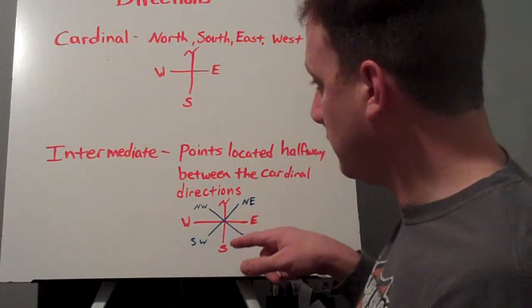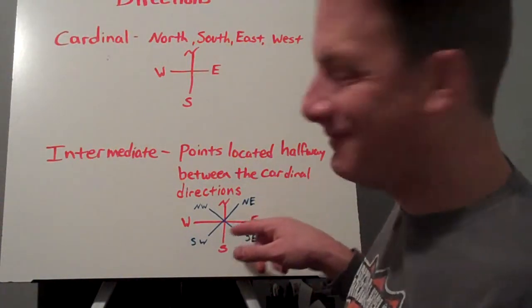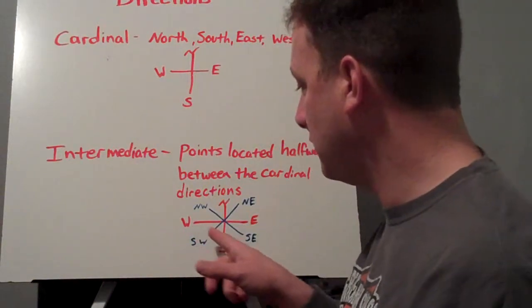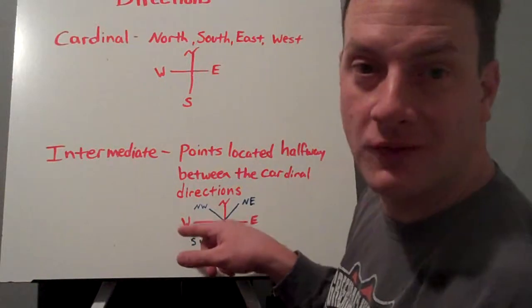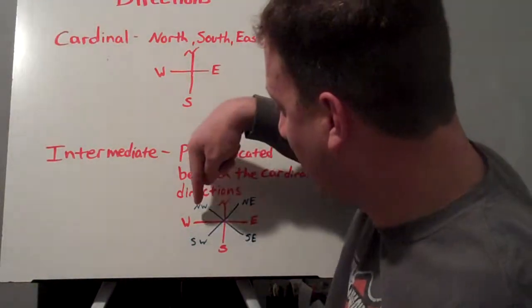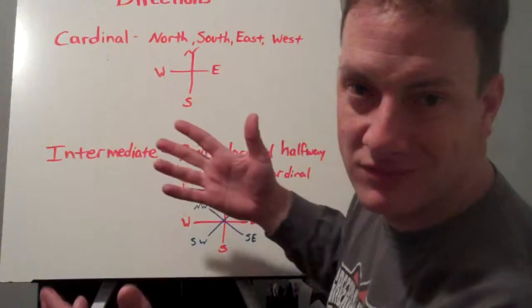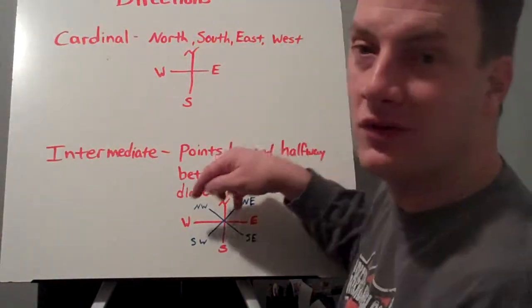If it's between the south and east on the compass rose, we call that southeast. If it's between the west and the south, we call that southwest. If it's located up here between north and the west, you guessed it, we call that northwest.